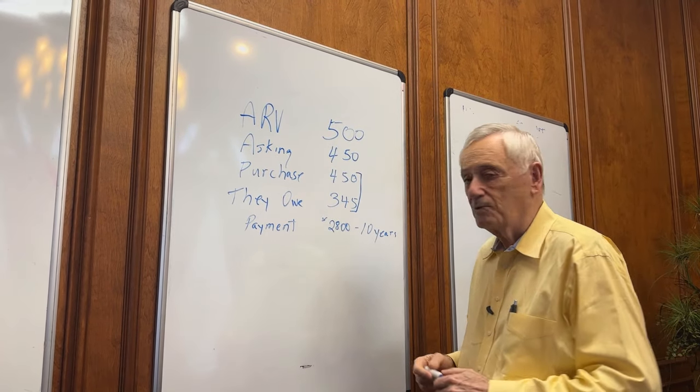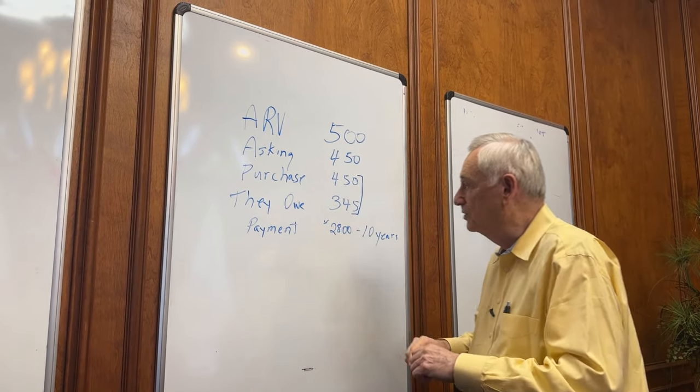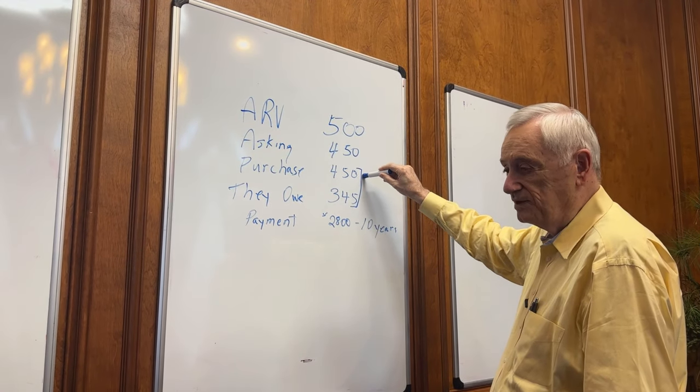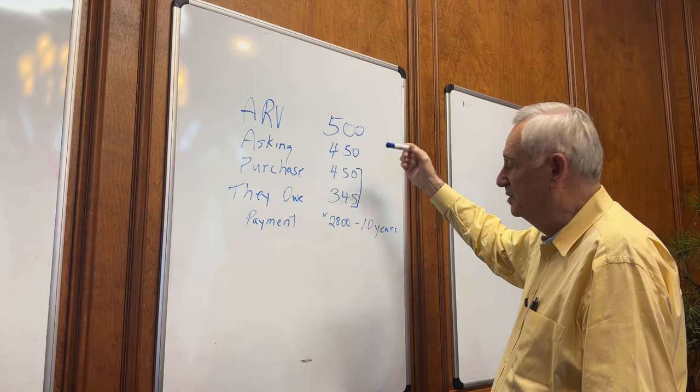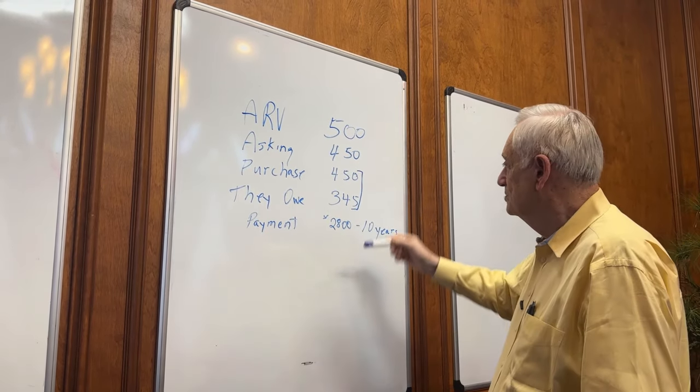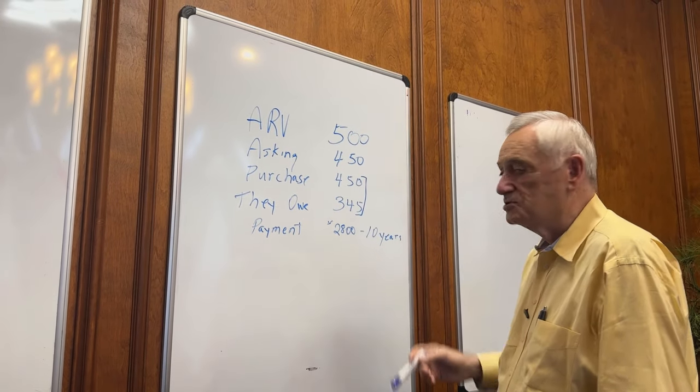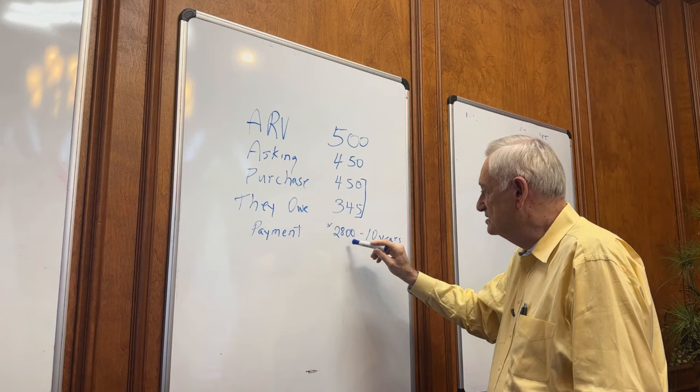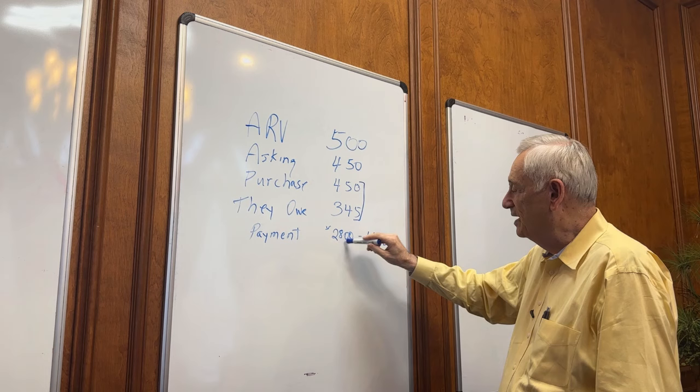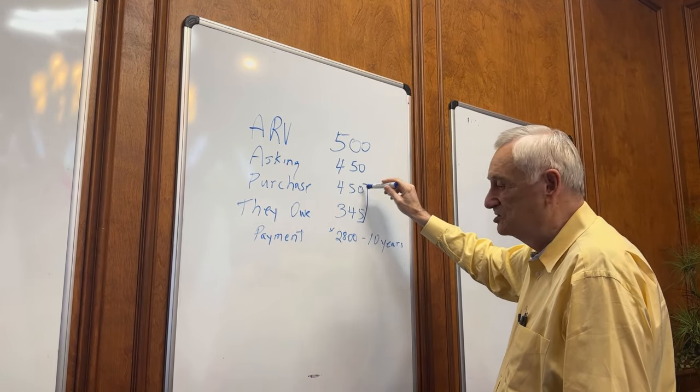I'm going to buy this property on what we call a wraparound mortgage. I'm going to have my attorney create a note and mortgage to this seller for the $450,000 that I owe him. This won't be in my name, this will be in an entity's name, so there's no personal liability at all. He's going to create a mortgage for $450,000 with a note structured so that the payment on the $450,000 is exactly the same principal interest payment on the $2,800. I'll be paying the bank directly, but there's going to be a contract to the seller for the $450,000.